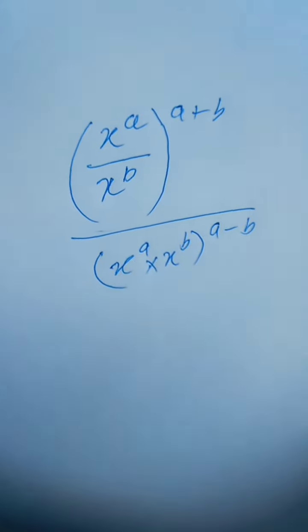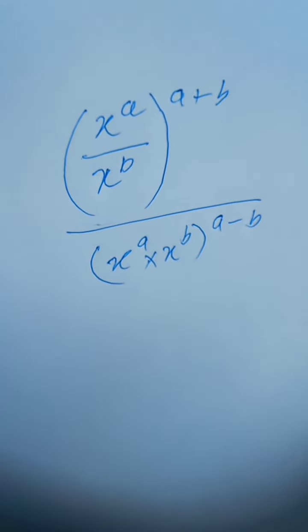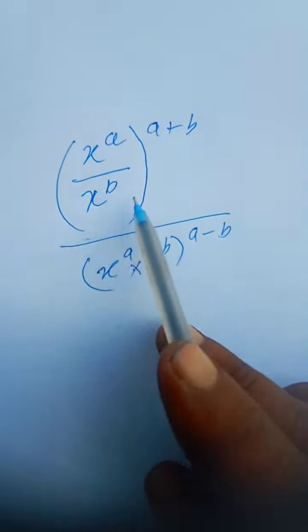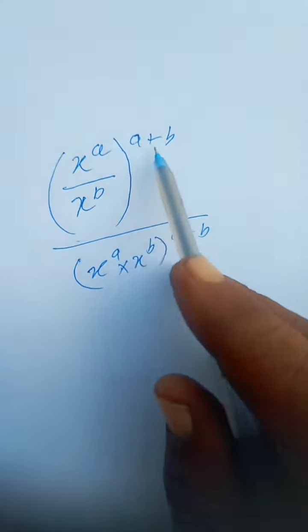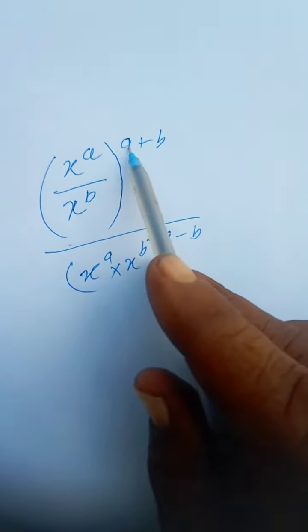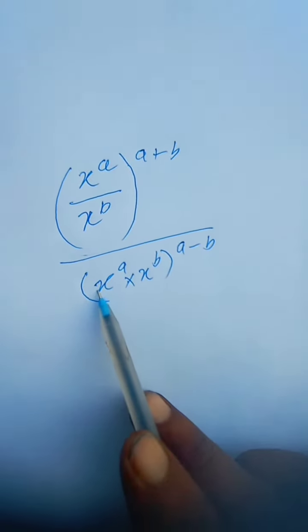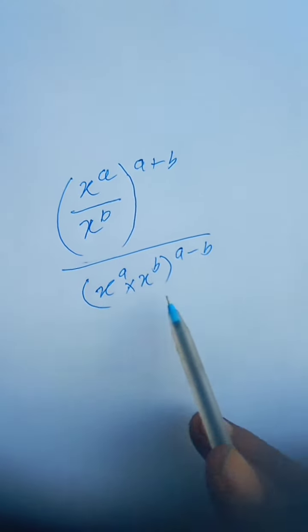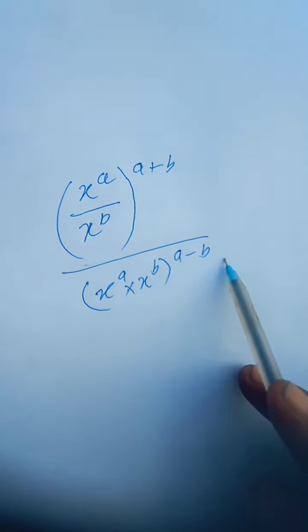Today I am going to solve an exponential problem. Here it is given: x to the power a upon x to the power b, whole to the power a plus b, divided by x to the power a into x to the power b, and whole to the power a minus b.